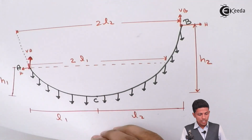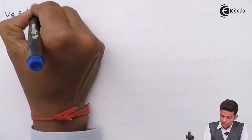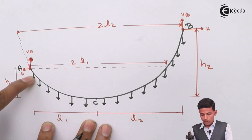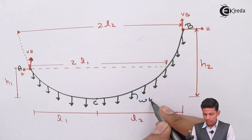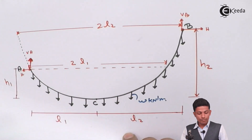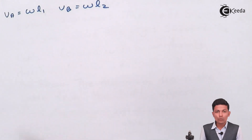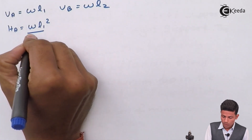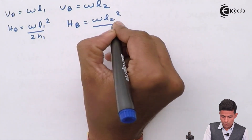To find VA, we use the direct formula: VA = W × L1. This W is the load, and L1 is the distance because we are dealing with the VA part. To find VB, use: VB = W × L2. To find HA, use: HA = W·L1² / (2·H1). To find HB, use: HB = W·L2² / (2·H2).